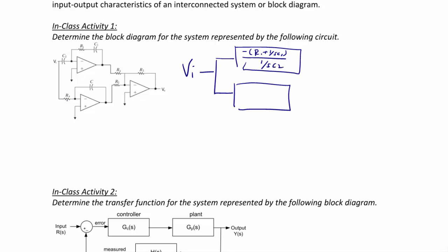The op amp at the bottom is also an inverting amplifier, so it's going to be a gain of negative 1 over SC2 divided by the input impedance RA. The two of these together, if we call these signals A and B, go into a summing amplifier that inverts the sum.